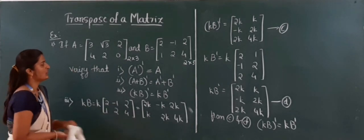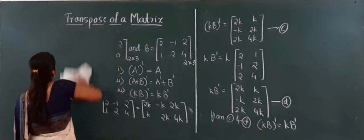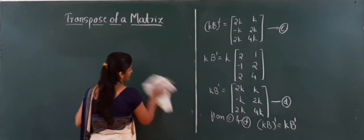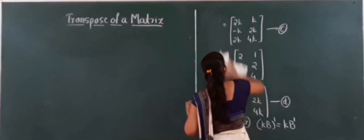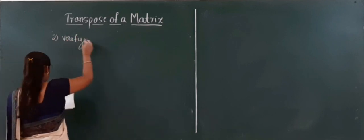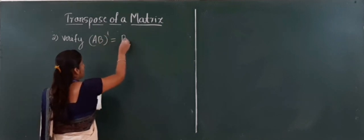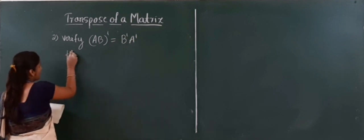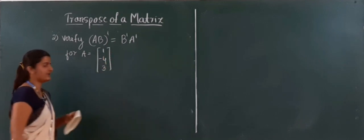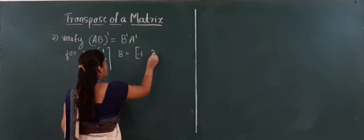Next I will move to the next important problem, which may occur in your examination for five marks. We have to verify that AB whole transpose equals B transpose into A transpose, for matrix A equal to 1, minus 4, 3 (a column matrix) and B equal to minus 1, 2, 1 (a row matrix).